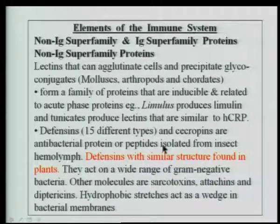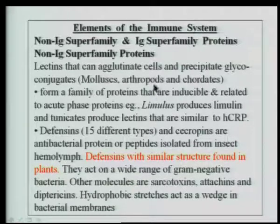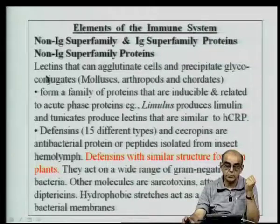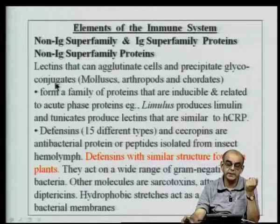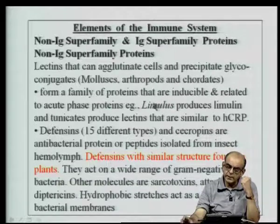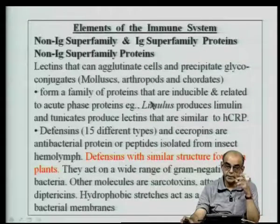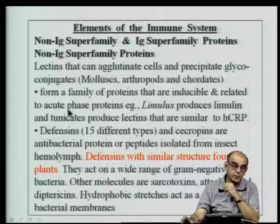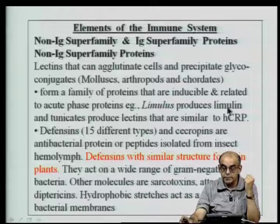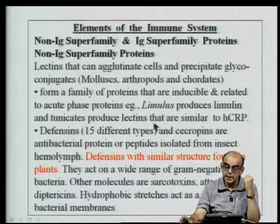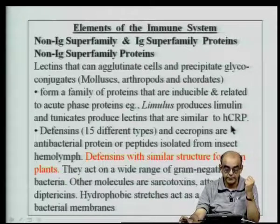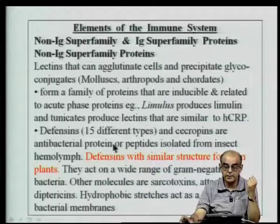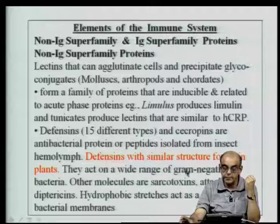Looking at elements of both non-Ig and Ig superfamily proteins, in molluscs, arthropods, and chordates, lectin family molecules play a very important role in agglutinating cells and precipitating glycoconjugates, especially in insects. They form a family of proteins inducible by bacterial infection and are related to the mammalian acute phase response. For example, Limulus produces a protein called limulin, and tunicates produce lectins similar to human C-reactive protein. There are also defensins — various types of antimicrobial proteins and peptides such as sarcotoxin, isolated from the hemolymph.